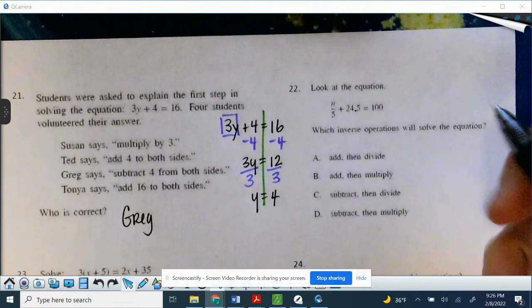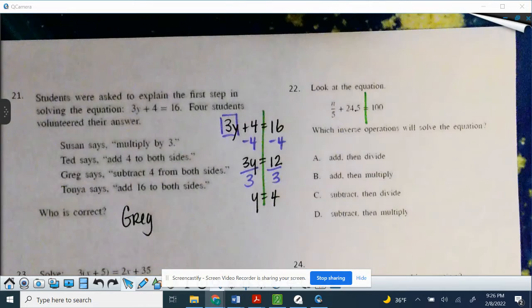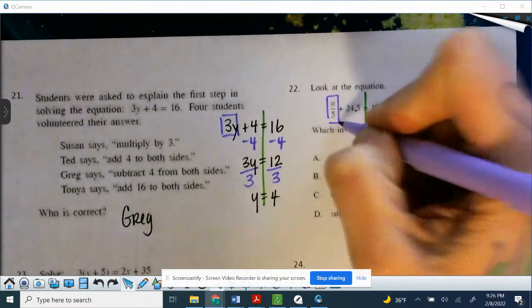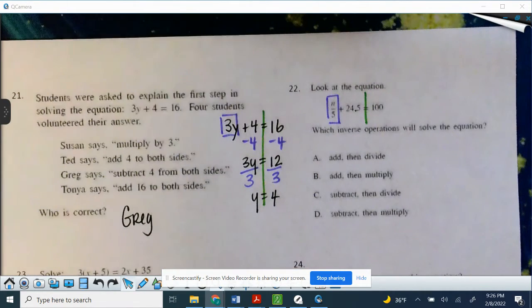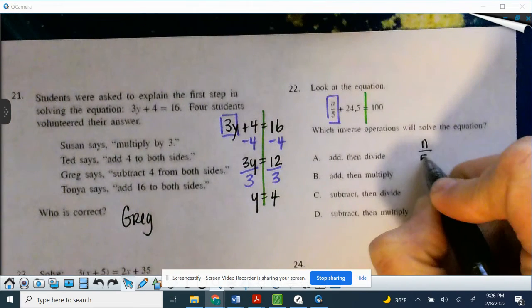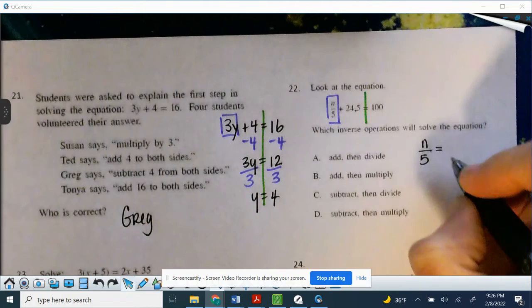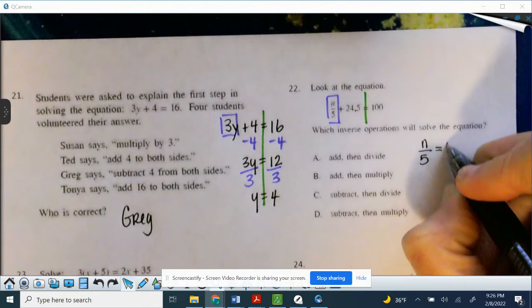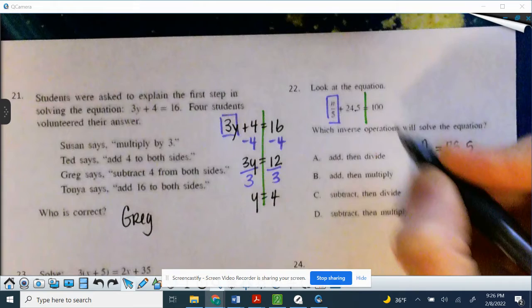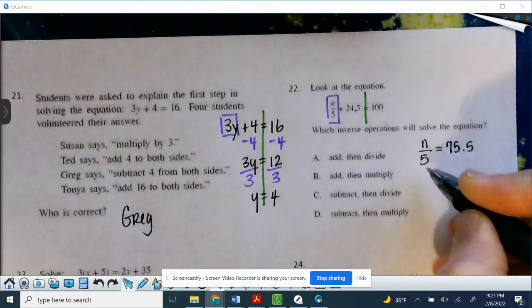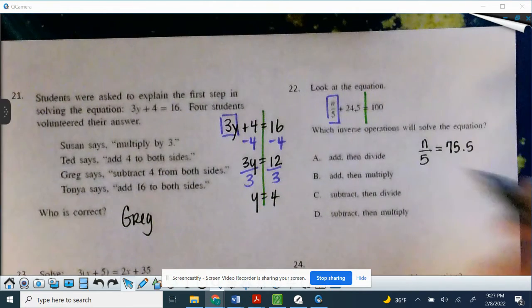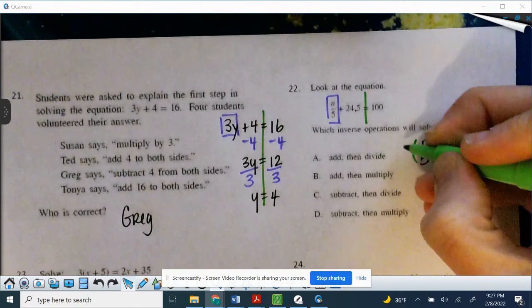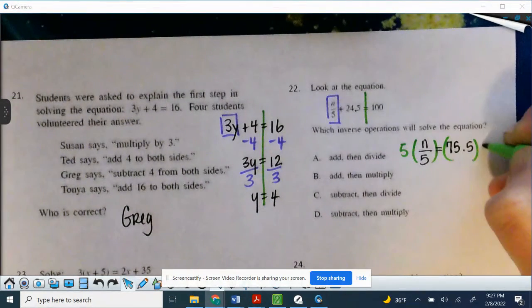So remember, this is where we have our great divide. Our n is with our fraction, and that's our boxes and our lines that I keep begging you to write, so hopefully you'll see the very first thing you should do is move that 24.5. So we're going to subtract first, and then once we subtract, we'll end up with n over 5 equals 75.5. And then to get the 5 out of the denominator, the inverse of division is multiplication, so we're going to multiply by 5.